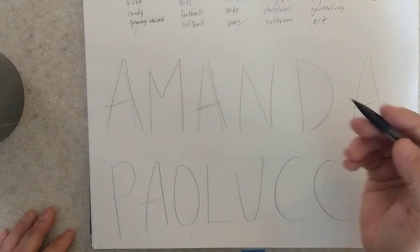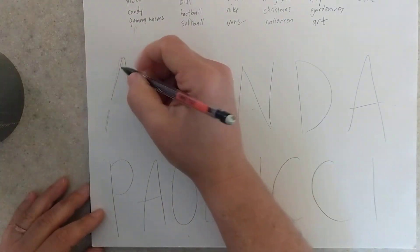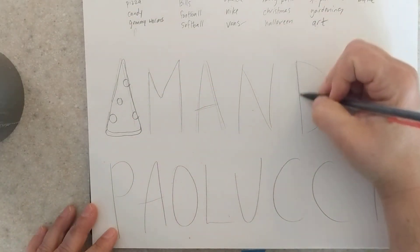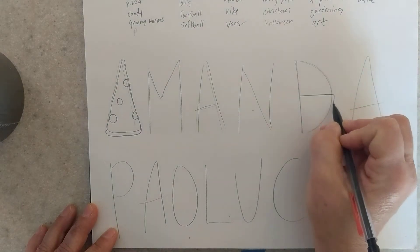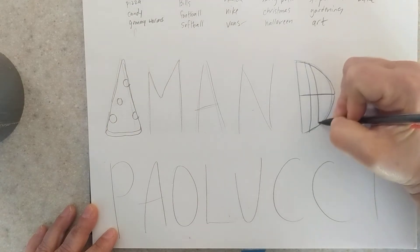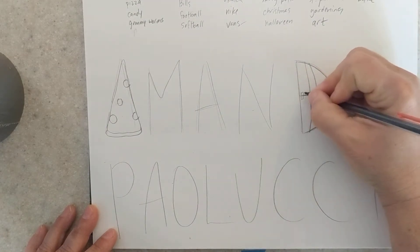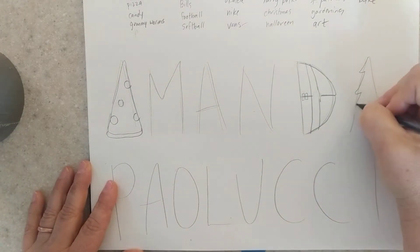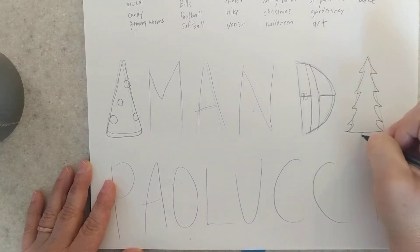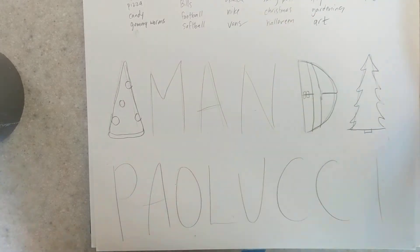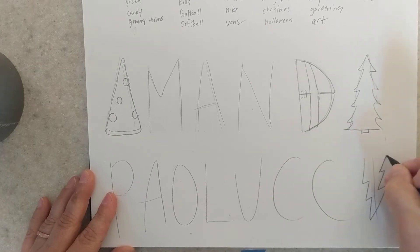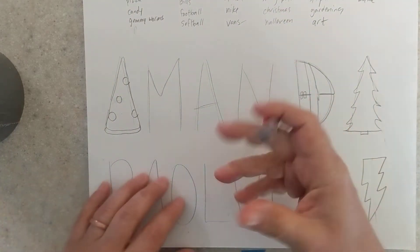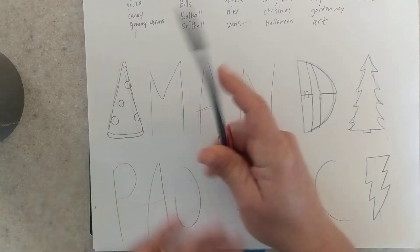From here, once I have my letters sketched out, I can start to plug in pictures. For instance, for my first A I could do the slice of pizza from my previous example. This shape right here kind of reminds me of the tip of a football, so I could turn this into a football. I could turn one of my A's into an evergreen tree because I love Christmas, and I also love camping and hiking. This I down here could be turned into a lightning bolt because I love Harry Potter. You just want to start to go through and turn these letters into pictures.